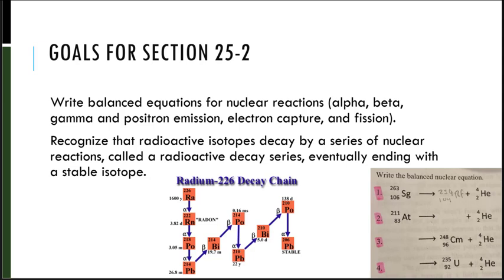Hello chemistry students, Dr. Tellis here for our next section. You will be able to write balanced equations for nuclear reactions using alpha, beta, gamma, and positron emission, electron capture, and fission, and recognize that radioactive isotopes decay by a series of nuclear reactions called a radioactive decay series, eventually ending with a stable isotope.